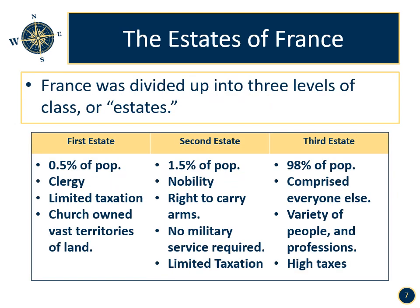The estates of France. France was divided up into three levels of class, or estates. The first estate represented 0.5% of the population and included the clergy. They paid limited taxes, and the church also owned vast territories of land across France. The second estate, 1.5% of the population, included the nobility. They had the right to carry arms, no military service was required, they paid limited taxes, and they also had hunting privileges.